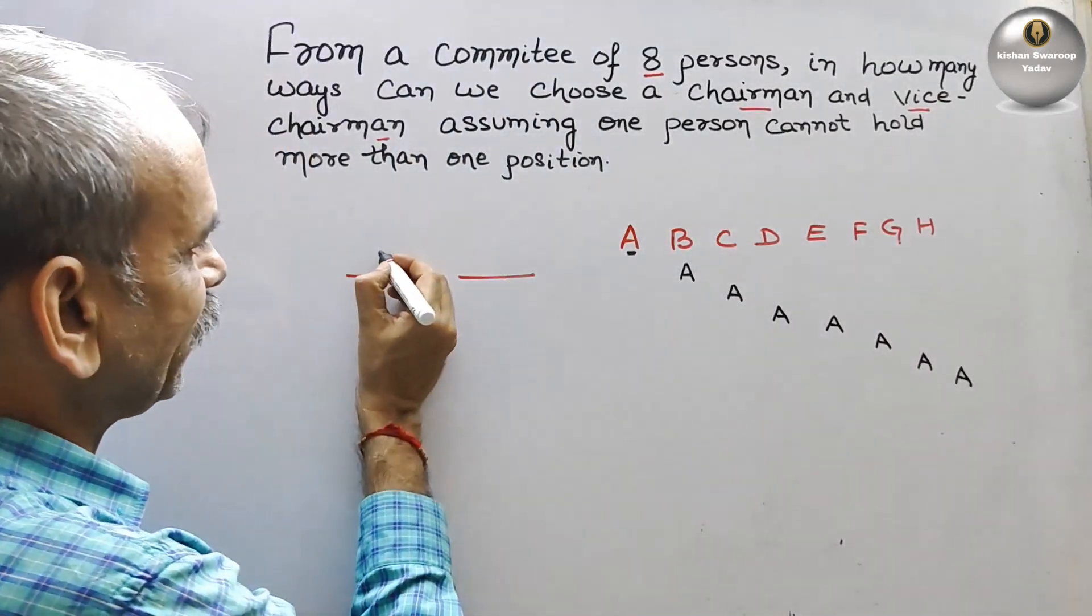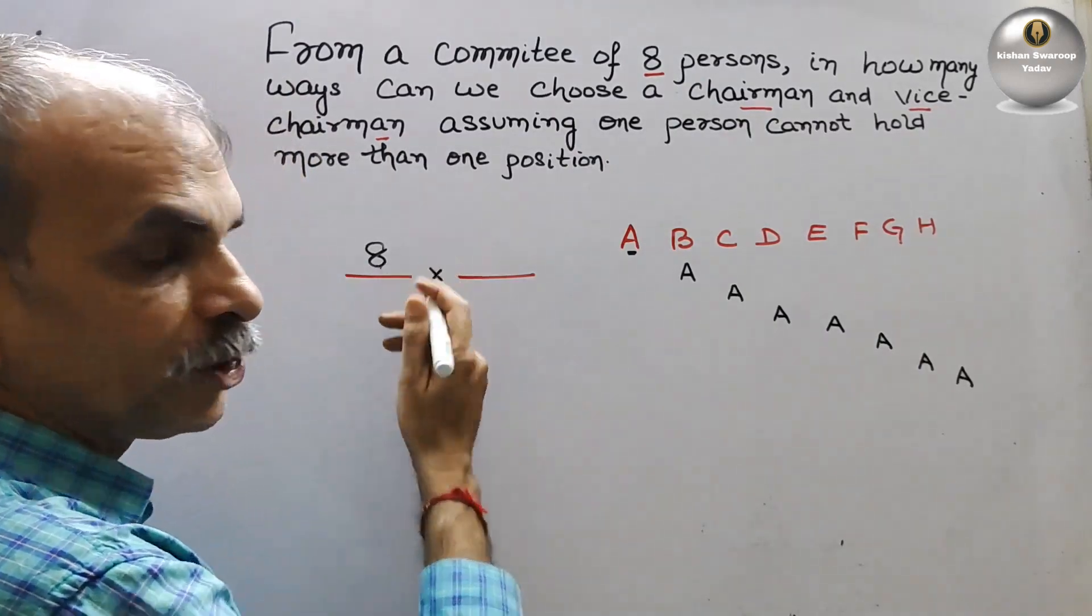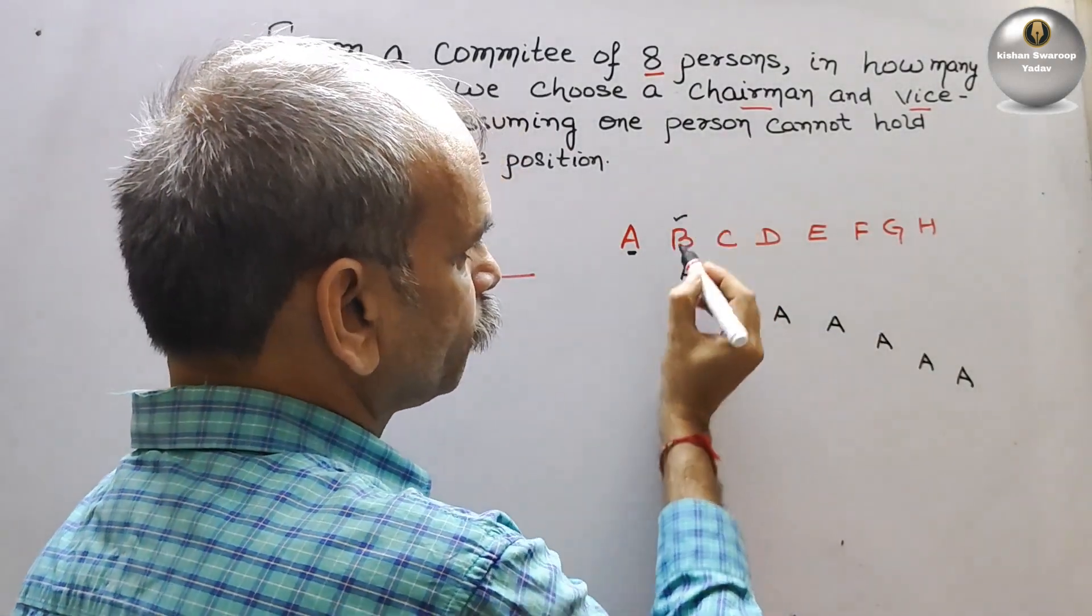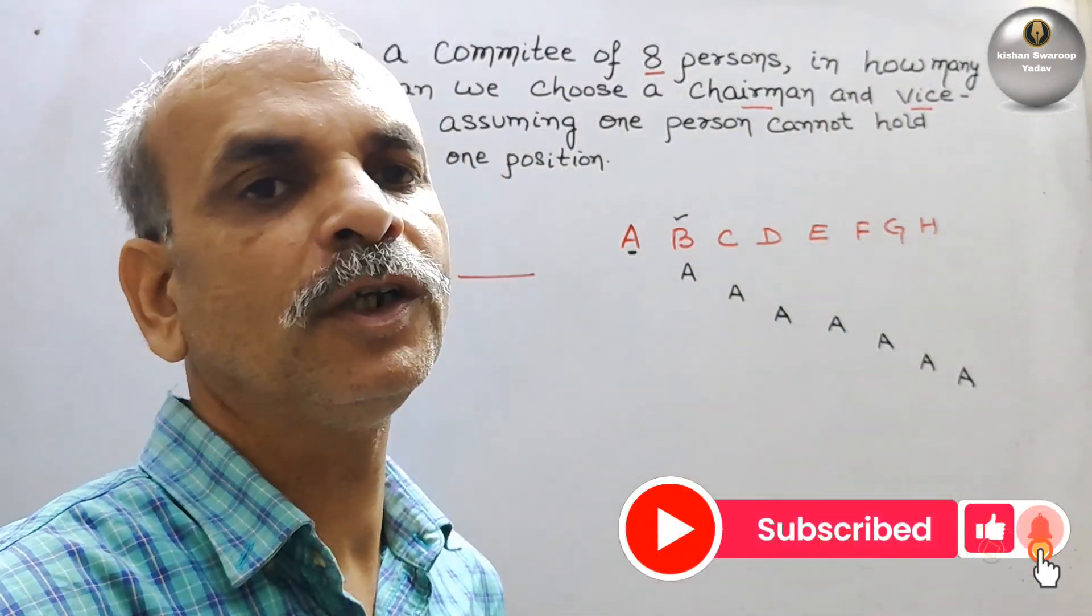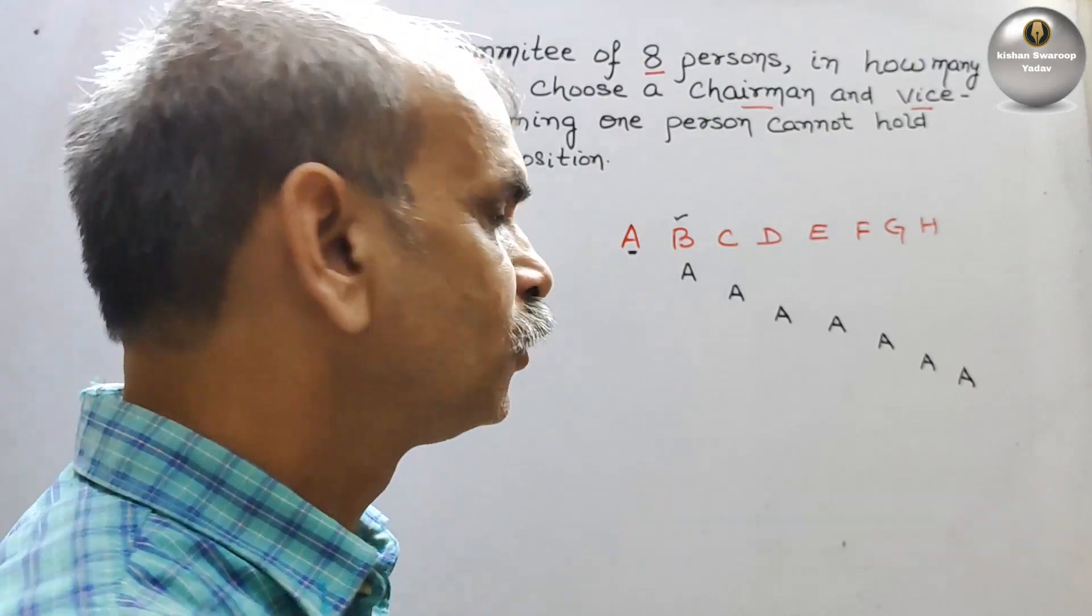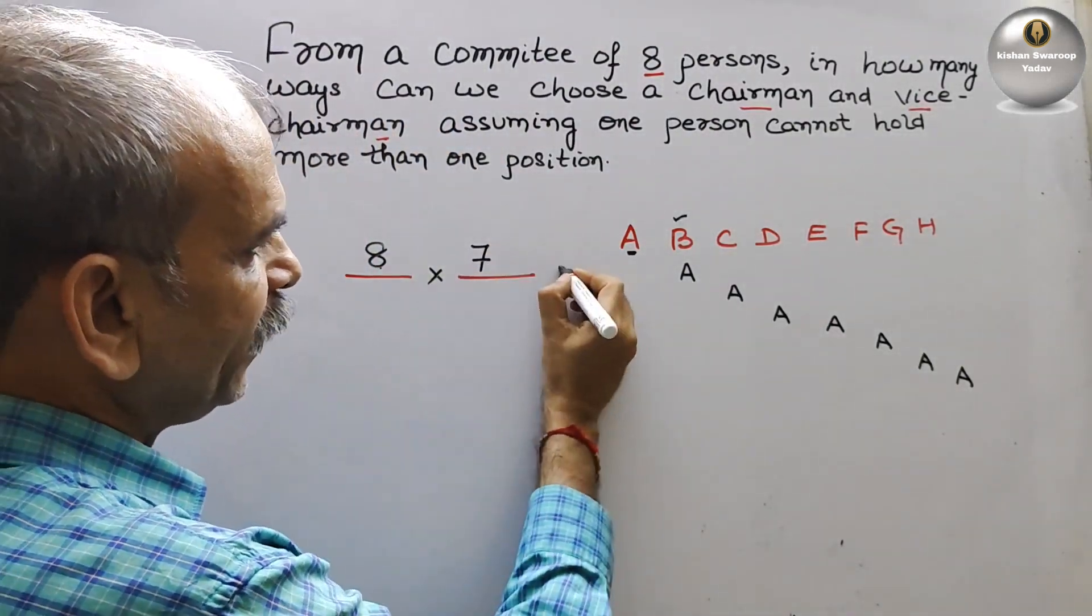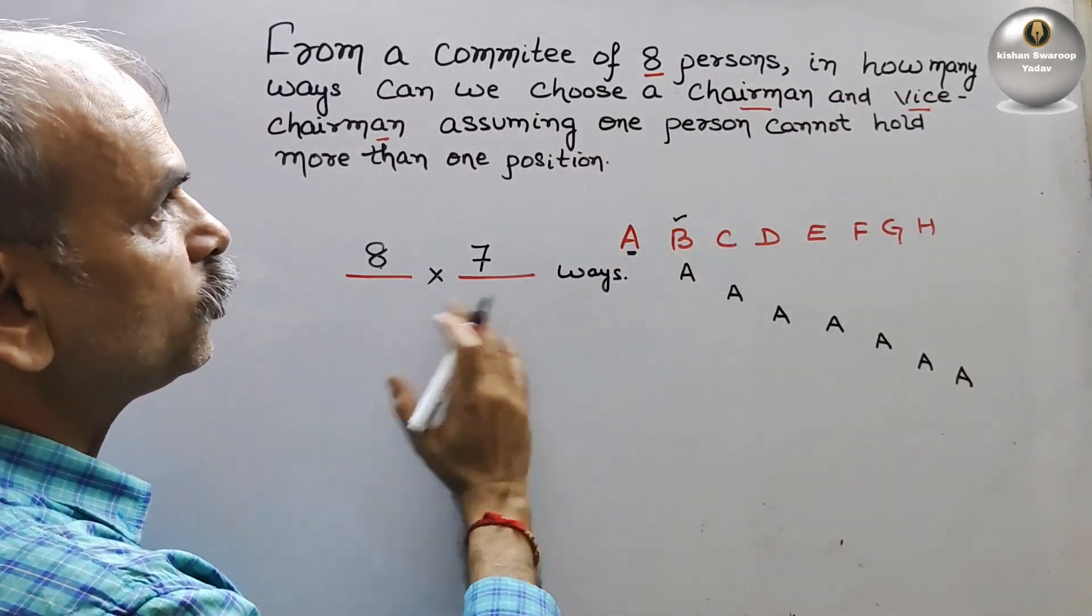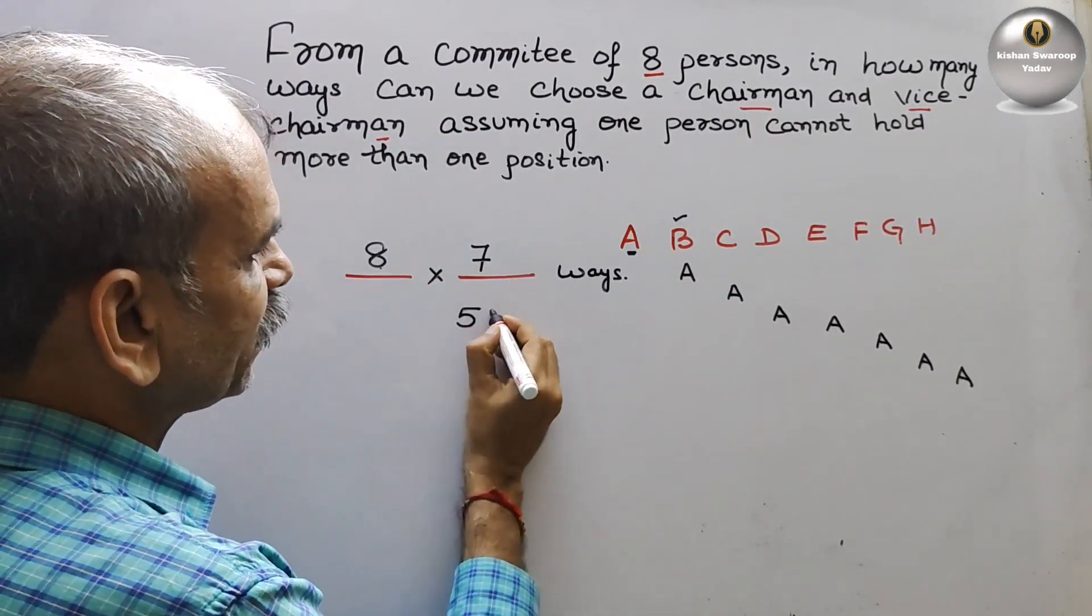So it will be at the eight ways. So here we will write it into. Now suppose the first position gets over. So next comes your B. So B can hold up to seven position only. So here comes seven. So that means in ways if we go for that, now how we can choose the persons in 56 ways.